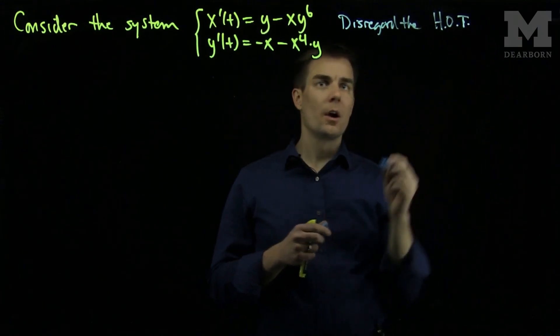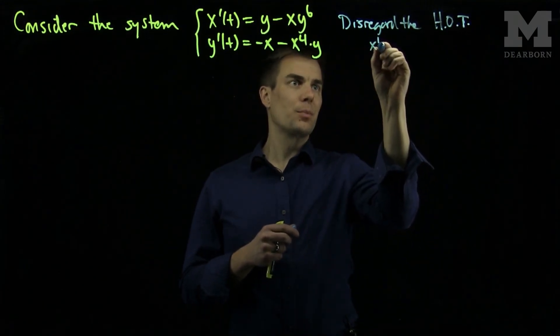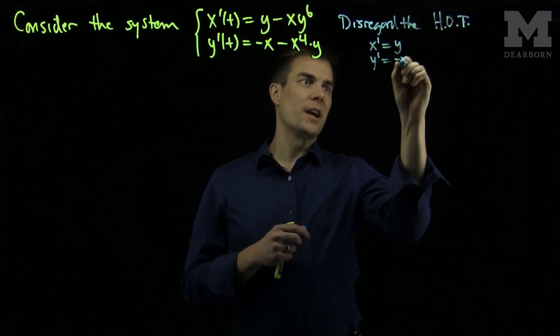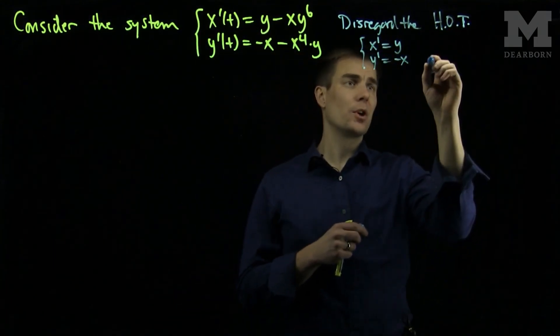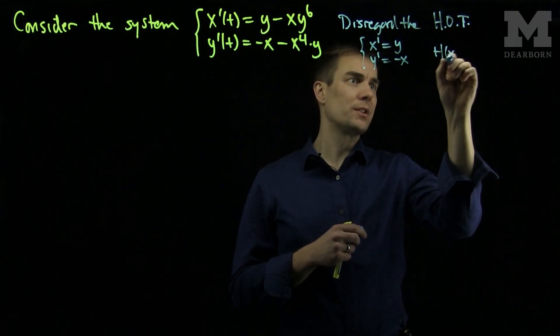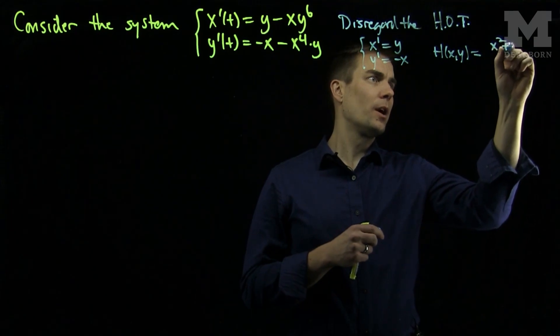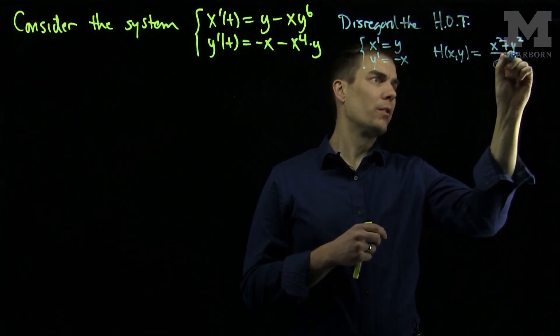our system will become x prime equals y and y prime equals negative x, and this system over here is Hamiltonian, and the Hamiltonian for this system, h of x and y, will be x squared plus y squared over 2.